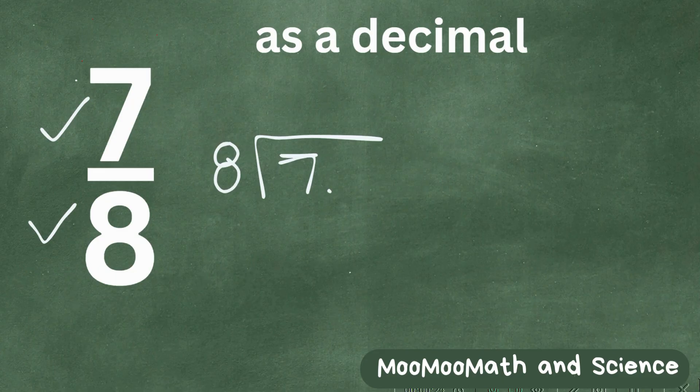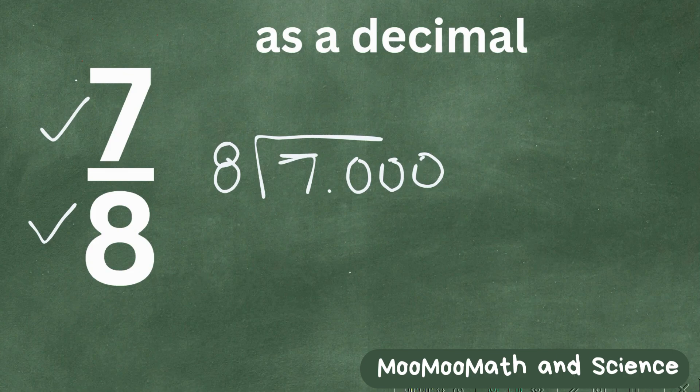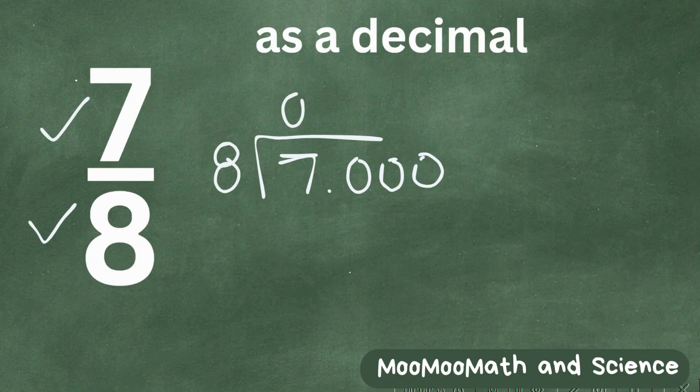So we're going to place it inside the doghouse, and I know 7 is smaller than 8, so it's going to be a decimal. So let's add some zeros. Now 8 is larger than 7, so let's go ahead and write a 0. Now let's bring up the decimal. This is very important, make sure you bring up the decimal.